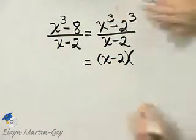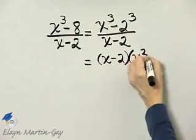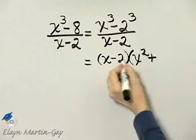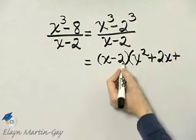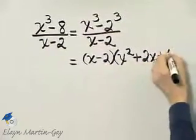And the trinomial is this first term squared, opposite sign, so plus. First times second, so 2x. And then this is always a plus. Last term squared, and 2 times 2 is 4.